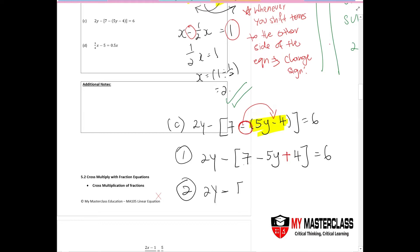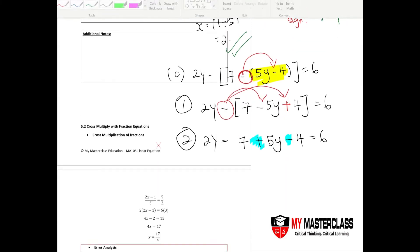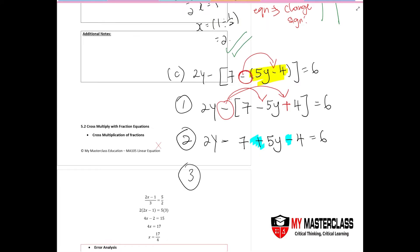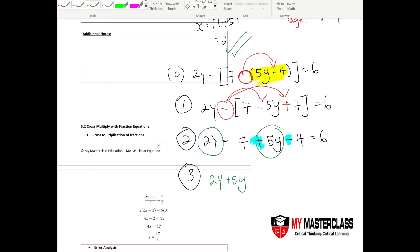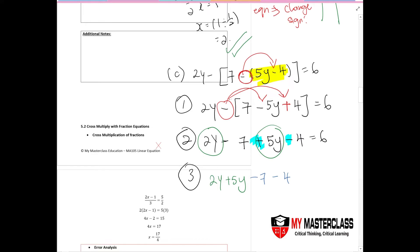Breaking open the big bracket, we no longer want the outer bracket, giving us seven plus 5y minus four equals six. Notice the signs changed again because of the negative sign in front of that bracket. Now combine like terms in the same family: 2y minus 5y, and constants negative seven minus four. This gives you negative 7y minus 11 equals six.